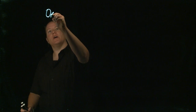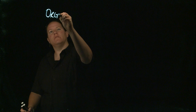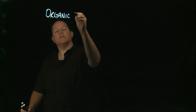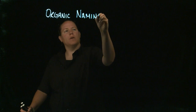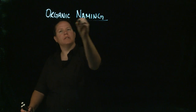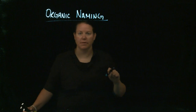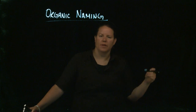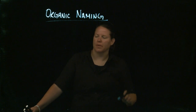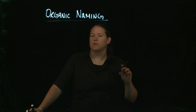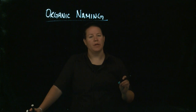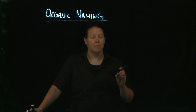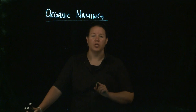We know from a previous video that organic chemistry is the chemistry of carbon, and carbon is unique because it can concatenate and it is tetravalent. What that means is that carbon has the ability to make really long chains.